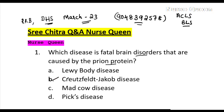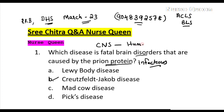Prions are proteinaceous infectious particles which can infect our brain and cause neurodegenerative brain disorders. The prion is a small proteinaceous infectious particle believed to be responsible for central nervous system (CNS) disorders in humans and animals, including Mad Cow Disease.